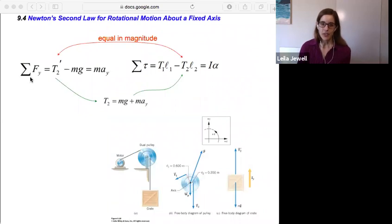First, if we look at the sum of the forces in the y direction on our crate, we have T2 prime going up and mg, the weight of the crate, going down. That's equal to the mass times the acceleration in the vertical direction, because the crate is being lifted in this instance by the pulley in the motor.